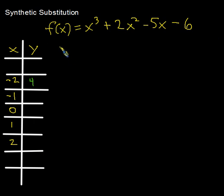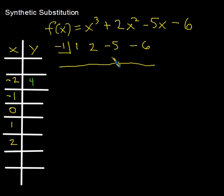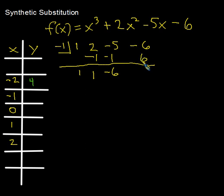Let's try x equals negative 1. Using coefficients 1, 2, negative 5, negative 6: 1 plus nothing is 1; negative 1 times 1 is negative 1; 2 plus negative 1 is 1; negative 1 times 1 is negative 1; negative 5 plus negative 1 is negative 6; negative 1 times negative 6 is positive 6; negative 6 plus 6 is 0. So f of negative 1 equals 0, and we record y equals 0 next to x equals negative 1.